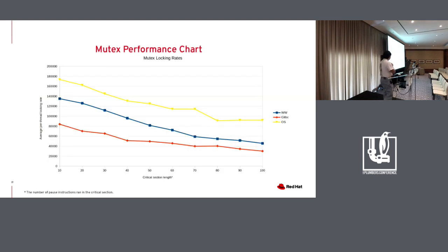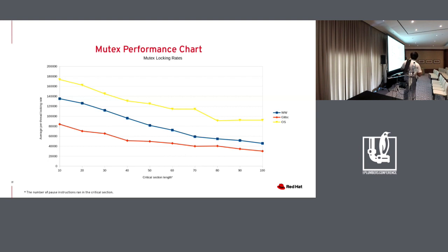This next slide shows relative performance as I increase the critical section length — in this case just the number of PAUSE instructions issued in the critical section. As I increase the length, the locking rate decreases for all implementations, but for the various wait/wake futex variants it decreases faster than for the OS futex. So the performance benefit actually increases with a larger lock critical section.